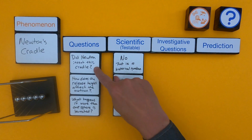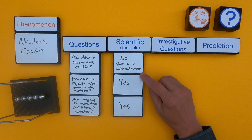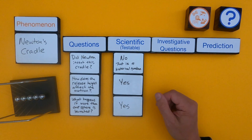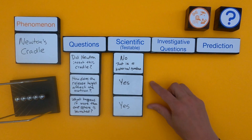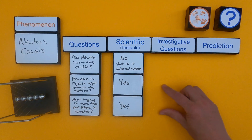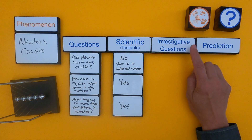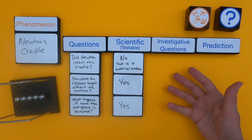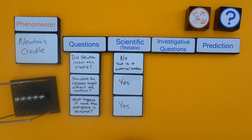The first question — did Newton invent the cradle? — that's not a scientific question; that's a historical question. I could answer it, but it doesn't classify as a scientific question. However, the other two are. For those that are testable, what I'm going to do is write an investigative question. An investigative question is one where I can change something and see how it affects something else.